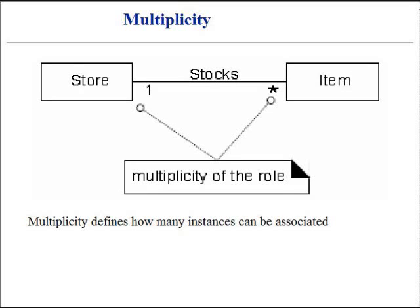Multiplicity defines how many instances of one class can be associated with instances of another class. For example, a single instance of a store can be associated with many items, namely zero or more, as indicated by an asterisk. The multiplicity value communicates how many instances can be legally associated with another value at any given particular moment, rather than over a span of time.